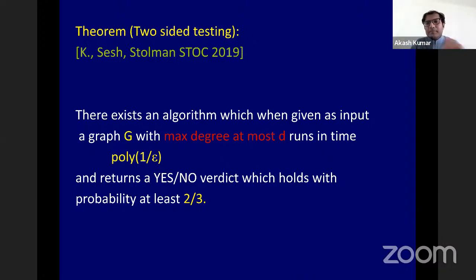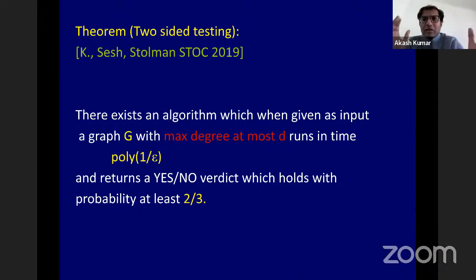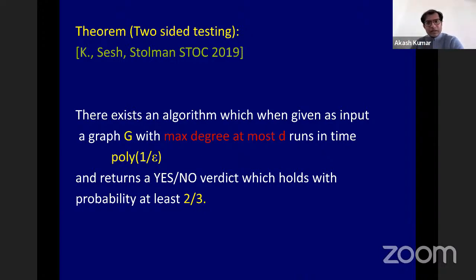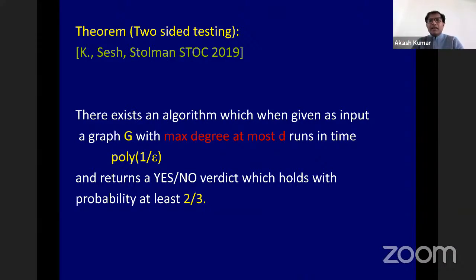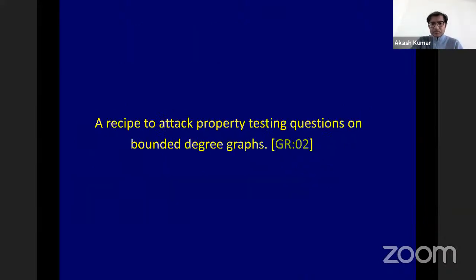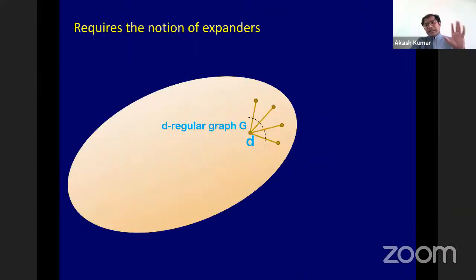You might wonder how to attack such questions. It turns out there is an entire recipe — a very good rule of thumb formulated by Goldreich and Ron — and I think this recipe is much more important than any of our results. Let me tell you about this black-box recipe for attacking property testing questions on bounded-degree graphs.